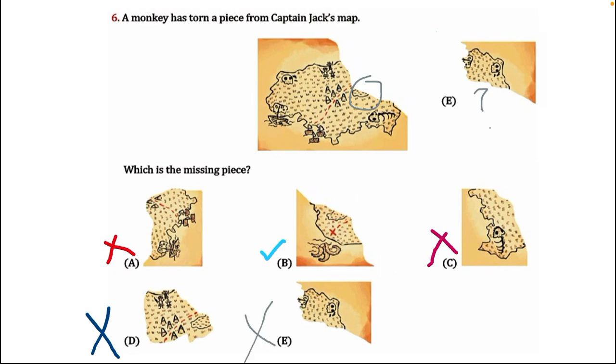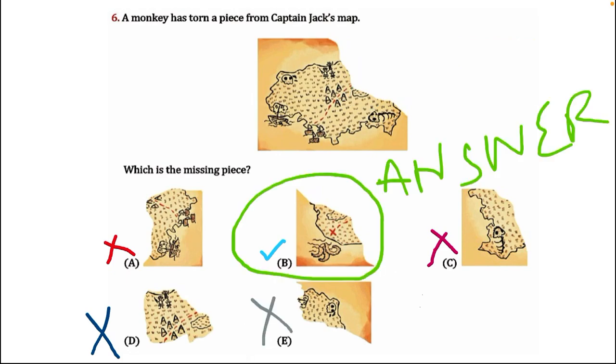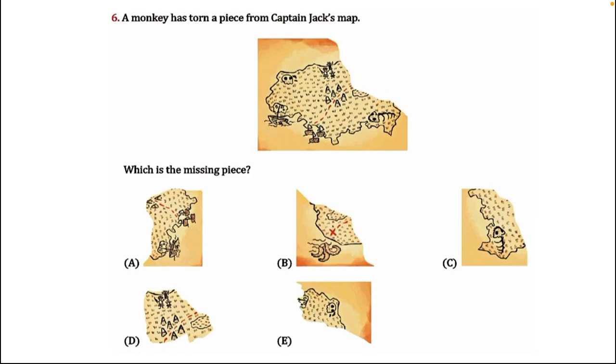So our correct answer is B. Now, we don't have a lot of time to solve the question like this. If we want to use another method, we move to method number 2. We know we need the corner, so the piece should have the corner.